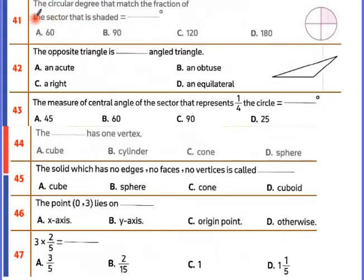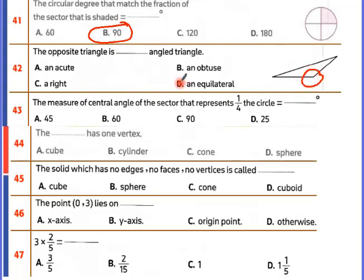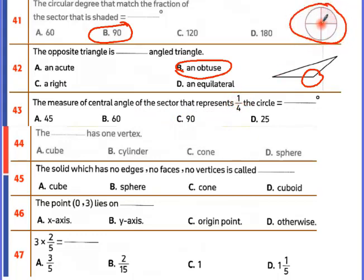The circular degree that matches the fraction: there's a quarter circle here, which is 90 degrees. The opposite triangle has an obtuse angle, so it's an obtuse-angled triangle. The major central angle of the sector represents a quarter circle, which equals 90 degrees.